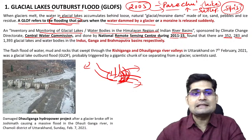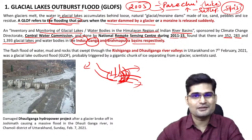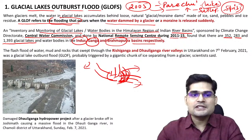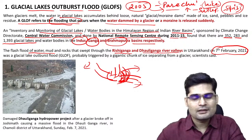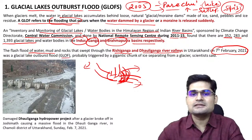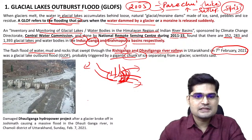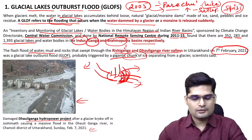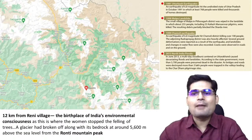There are about 352, 283, and 1393 glacial lakes in the Indus, Ganga, and Brahmaputra basins respectively — a huge number. The flash flood on 7th February 2021 happened in the Rishi Ganga and Dhauliganga river valleys, where a huge chunk of ice came down in the Rishi Ganga valley, affecting the Dhauliganga Hydro Power Project and others. We'll now look at the map of this area.